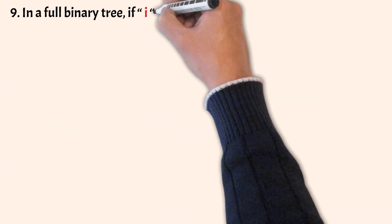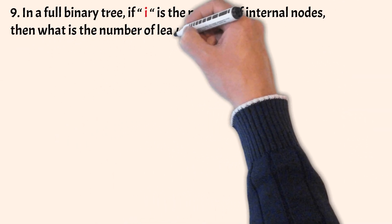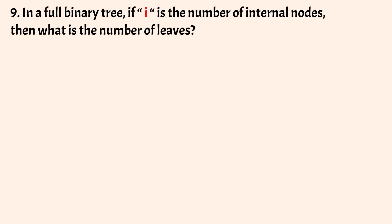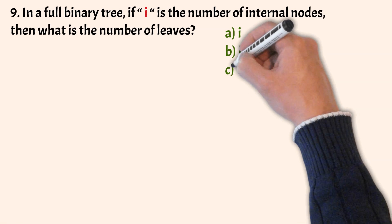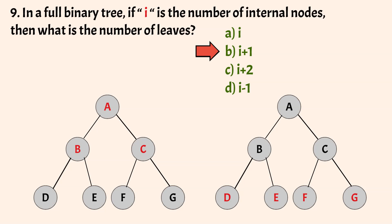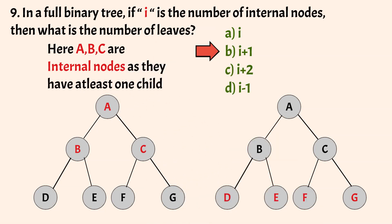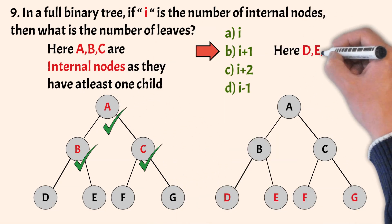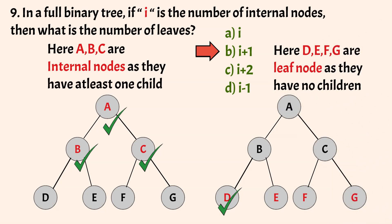Coming to the next question. In a full binary tree, if I is the number of internal nodes, what is the number of leaves? The options are: I, I plus 1, I plus 2, I minus 1. The correct answer is Option B, that is I plus 1. The number of leaf nodes is always one more than the number of internal nodes. In this example, A, B, C are internal nodes as they have at least one child, and D, E, F, G are leaf nodes as they have no children. The number of internal nodes is 3 and leaf nodes are 4, that is I plus 1.